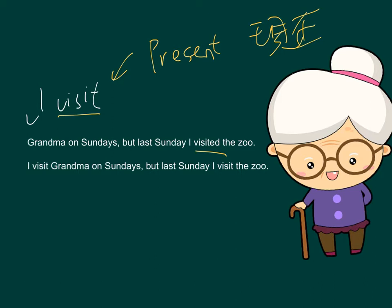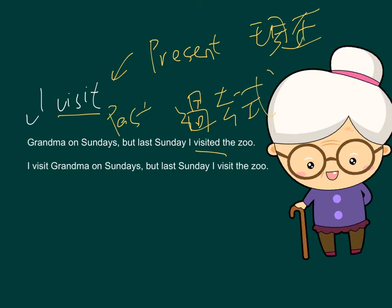But 'last Sunday I visited the zoo.' 上個星期呢，我就去了動物園喔。那上個星期就是之前發生了的啦，那當然那個動詞是要用過去式啦。Right? So we will use past tense instead. 過去式啦。So it is past tense here.